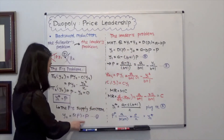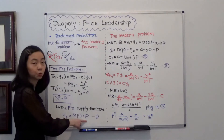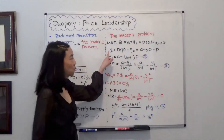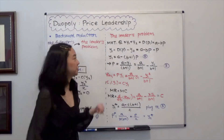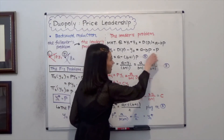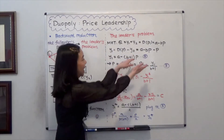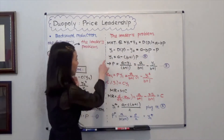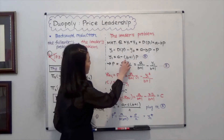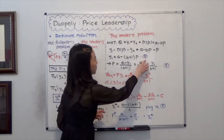From Equation 1 we know y2 is equal to p, so substituting that gives y1 equal to a minus bp minus p. After rearranging, y1 is equal to a minus (b plus 1) times p. We call that Equation 2.